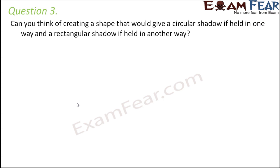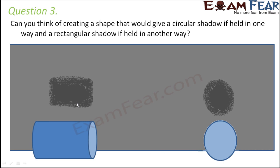Question number three: can you think of a shape that gives a circular shadow if held one way and a rectangular shadow if held another way? Consider a cylinder — it has a circular face at one end and a rectangular face on the other. If light falls on the rectangular face, the shadow formed is rectangular. If you hold the cylinder so the circular part faces the light, that portion blocks the light and a circular shadow is formed. Various objects can give different shadow shapes depending on how light falls on them.